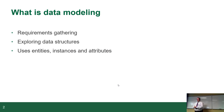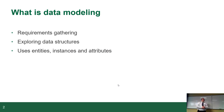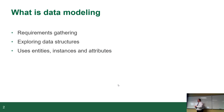Another part of data modeling is exploring data structures. After you've figured out the requirements, you start exploring all the data and figuring out how it's related and how it's broken down. Data modeling specifically uses three pieces of terminology: entities, instances, and attributes, which I'll be getting into in further slides.